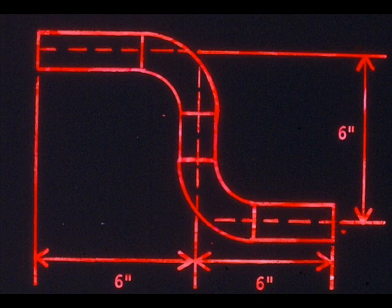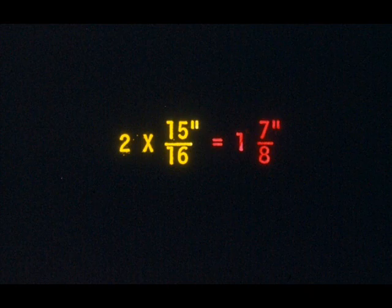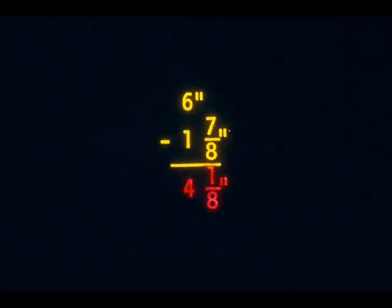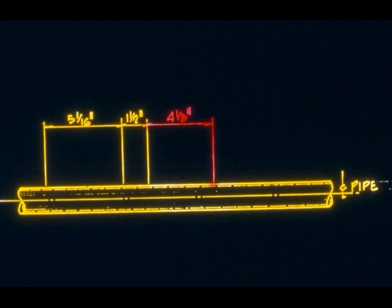Since your second leg has a bend on both ends, you must subtract the take-up from it twice. Two times fifteen-sixteenths equals one and seven-eighths inches. Subtract one and seven-eighths from six inches, which gives you four and one-eighths. This is the length of your second leg. Measure off four and one-eighths inches and make your third mark. This mark shows you where your second bend begins.